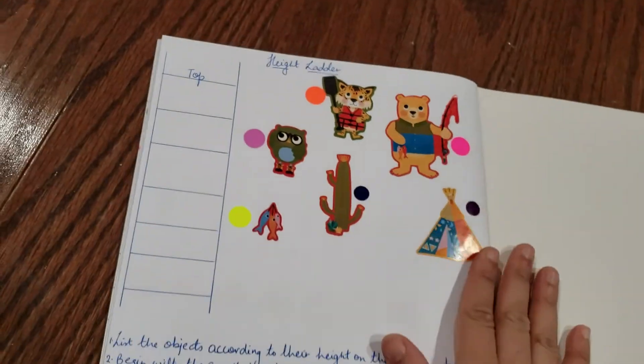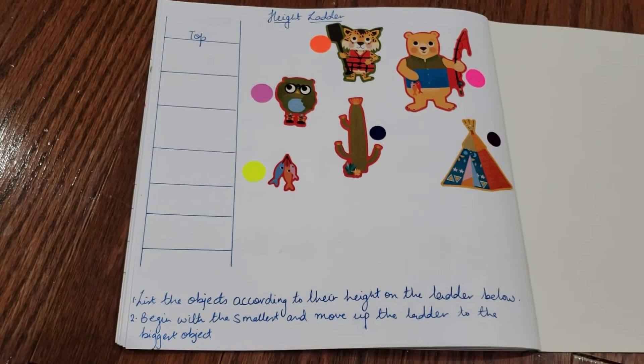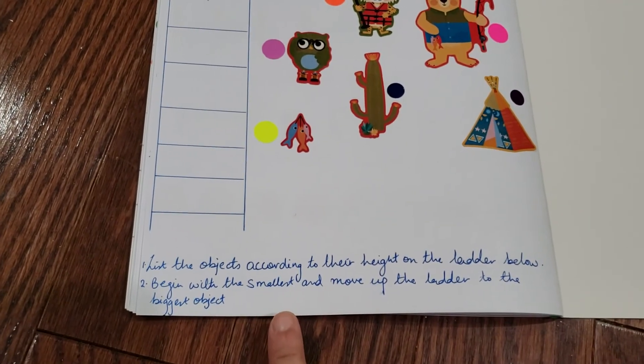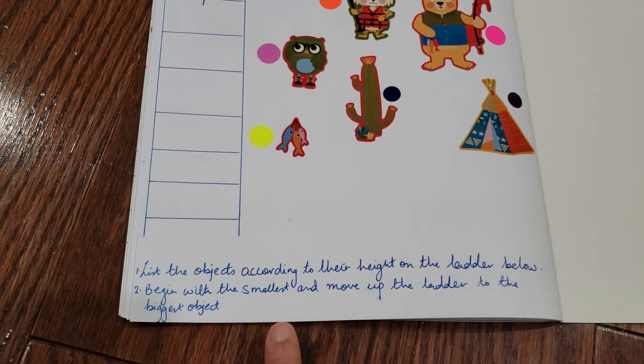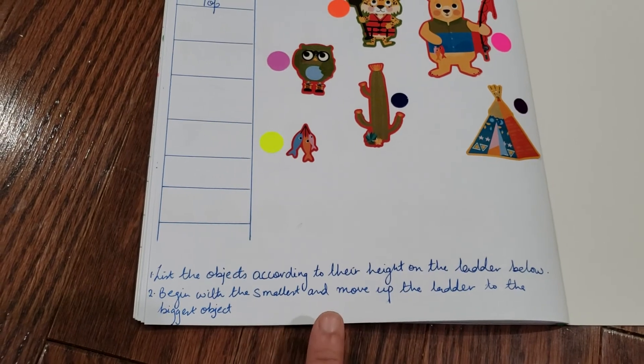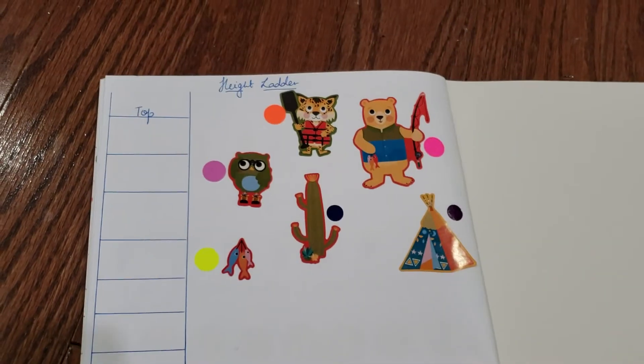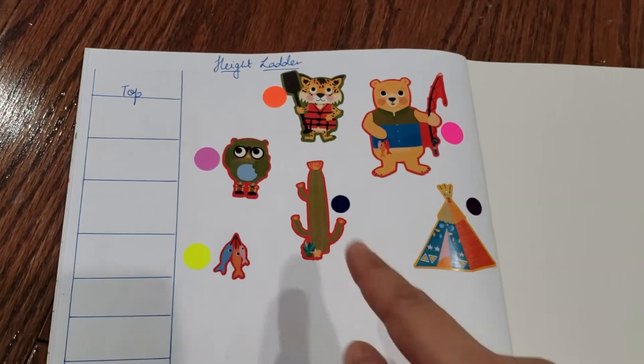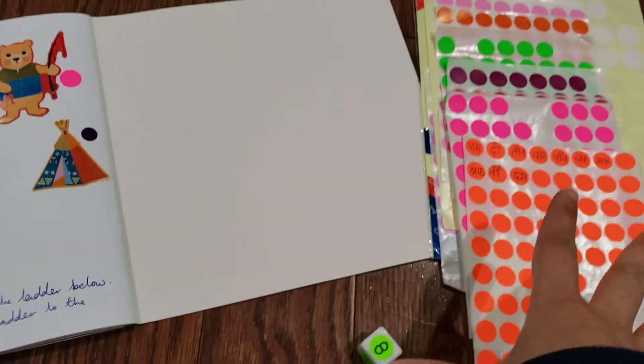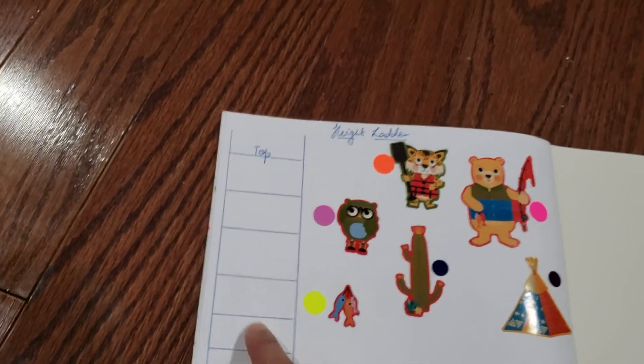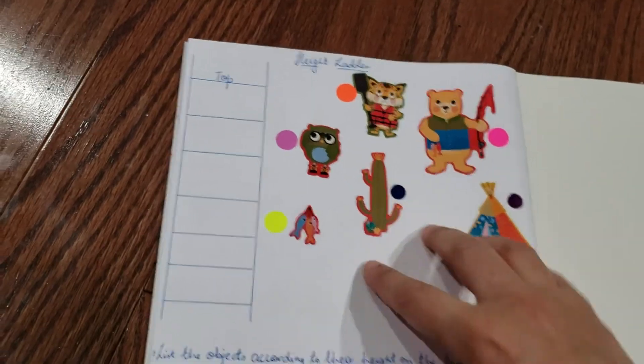The last activity is a fun one - it's a height ladder. The directions are: list the objects according to their height on the ladder below, begin with the smallest and move up the ladder to the biggest object. You have the stickers here - he needs to take the sticker and start from here and go to the top.